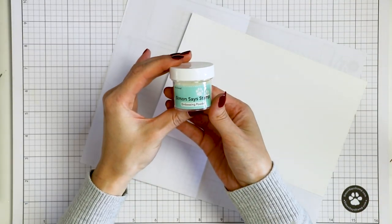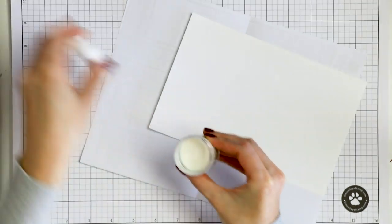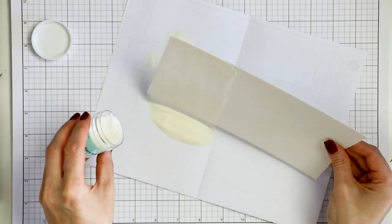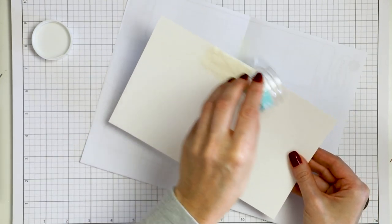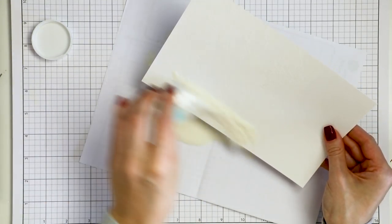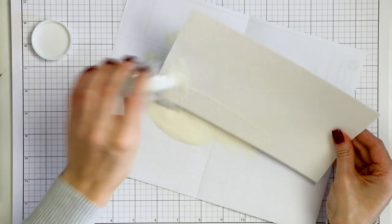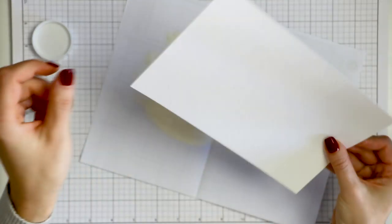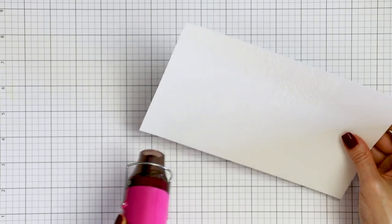I'm using Simon's fine detail clear embossing powder here. I picked the fine embossing powder as this background has a ton of intricate details to it and using a regular embossing powder will not do the trick as it will obliterate a lot of that detail. So make sure you use the proper kind of embossing powder when working with detailed backgrounds such as this one.